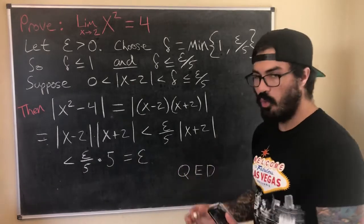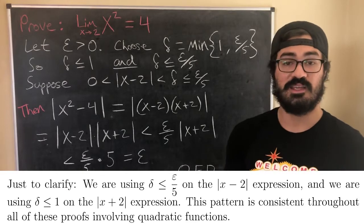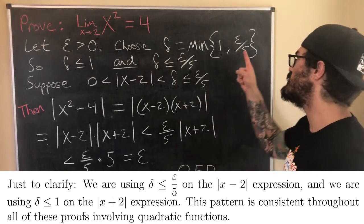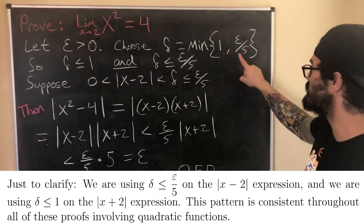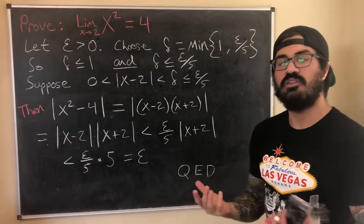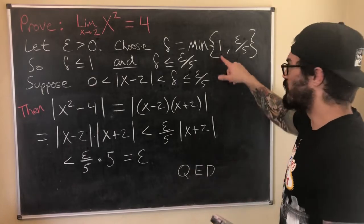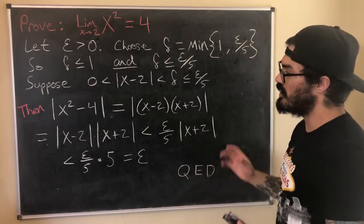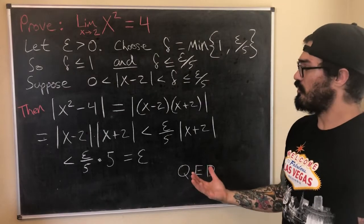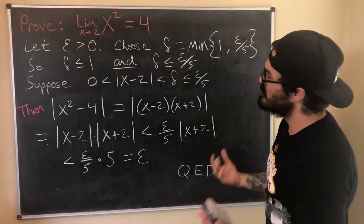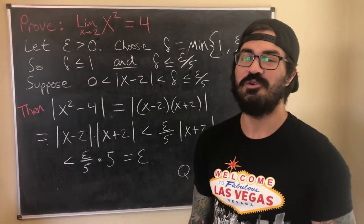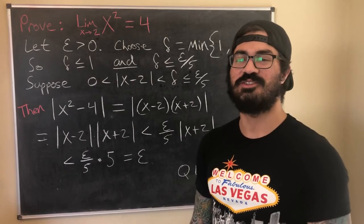You can also write a proof by cases: Case 1, suppose epsilon is between 0 and 5 — then the minimum is ε/5; Case 2, suppose epsilon ≥ 5 — then the minimum is 1. That works out the same way, but I prefer using the two inequalities directly — I think it's slicker. This is a little tricky and may take some time to think through, but if you have questions let me know in the comments. Hope you got something out of this video — keep flexing those brain muscles and I'll see you later.